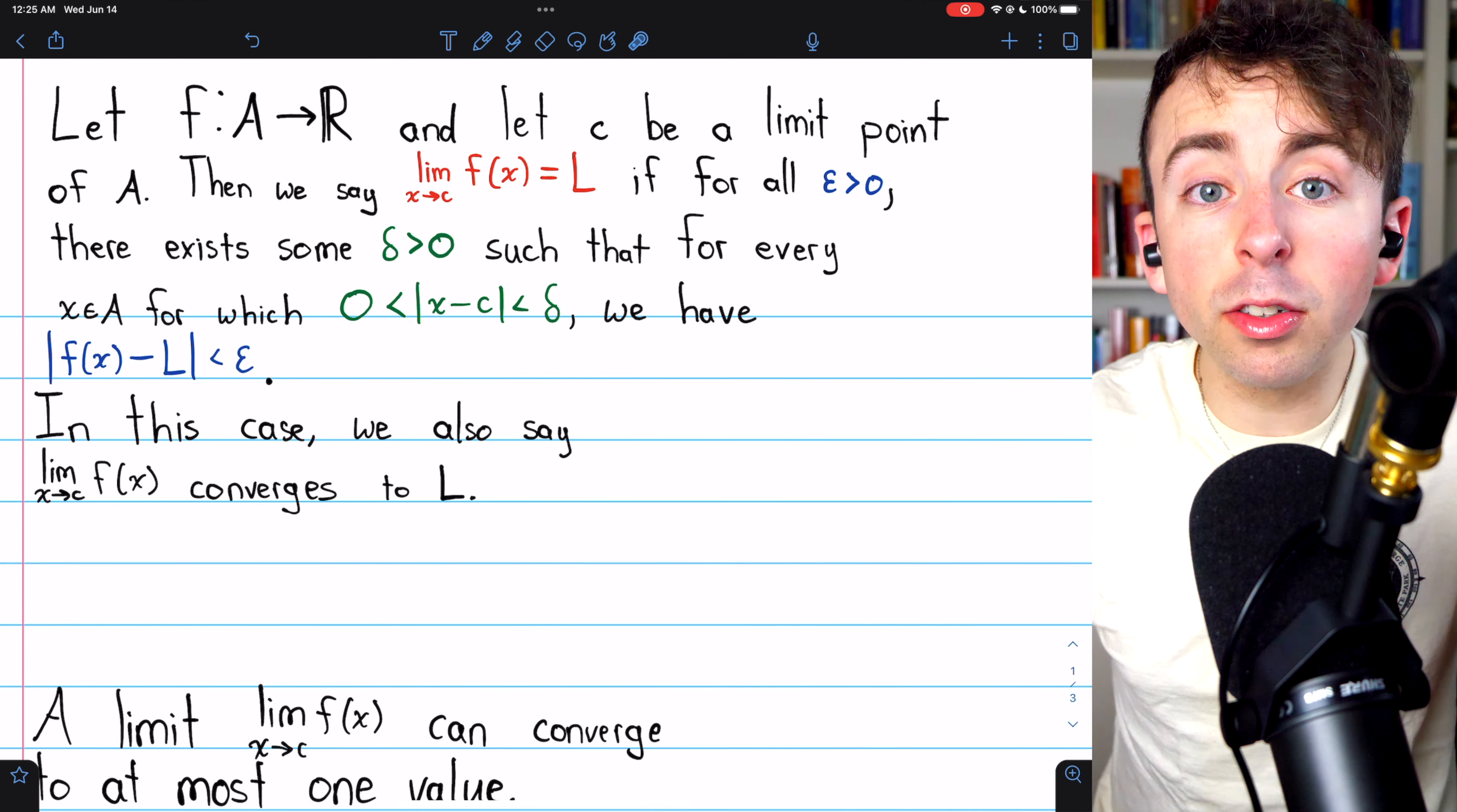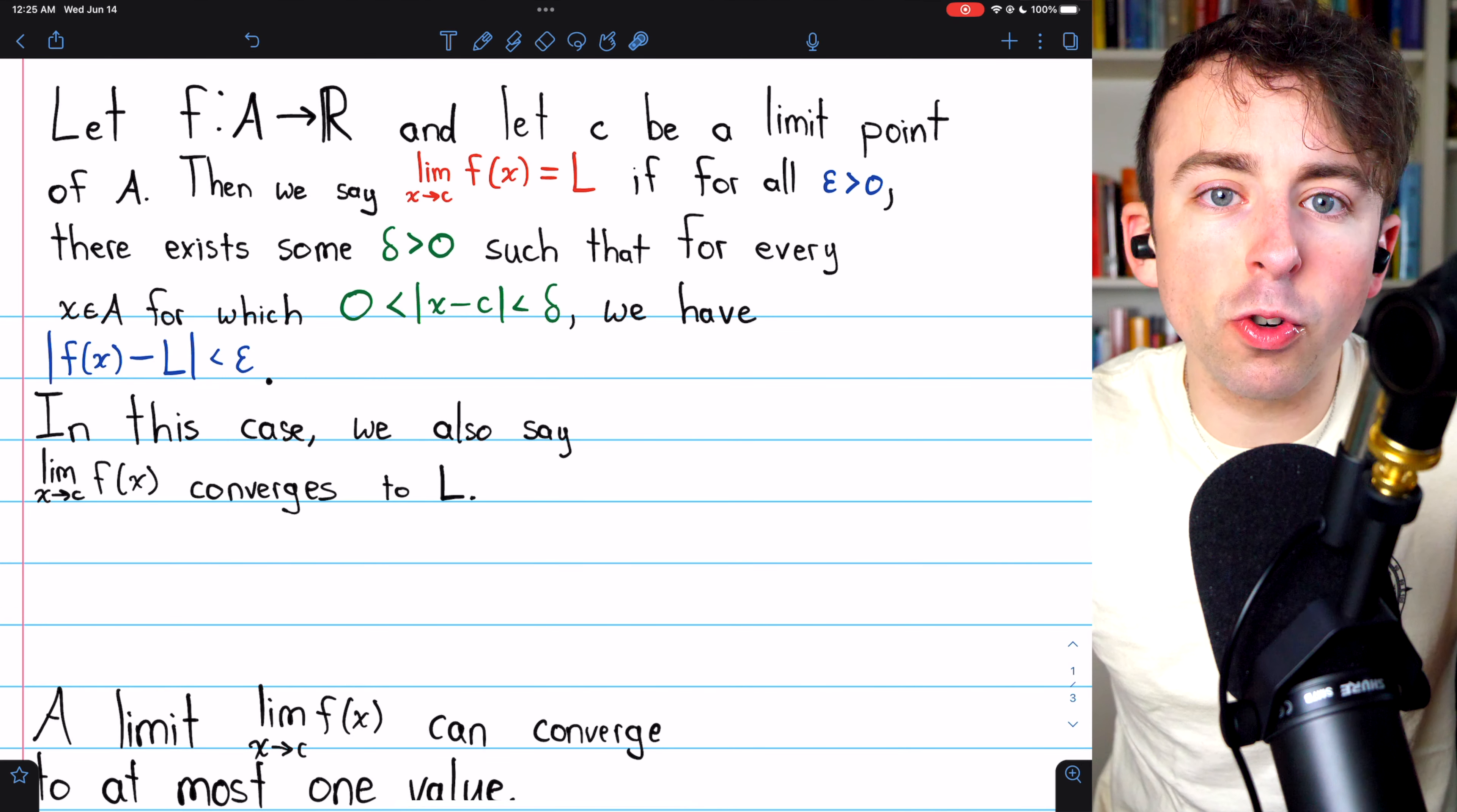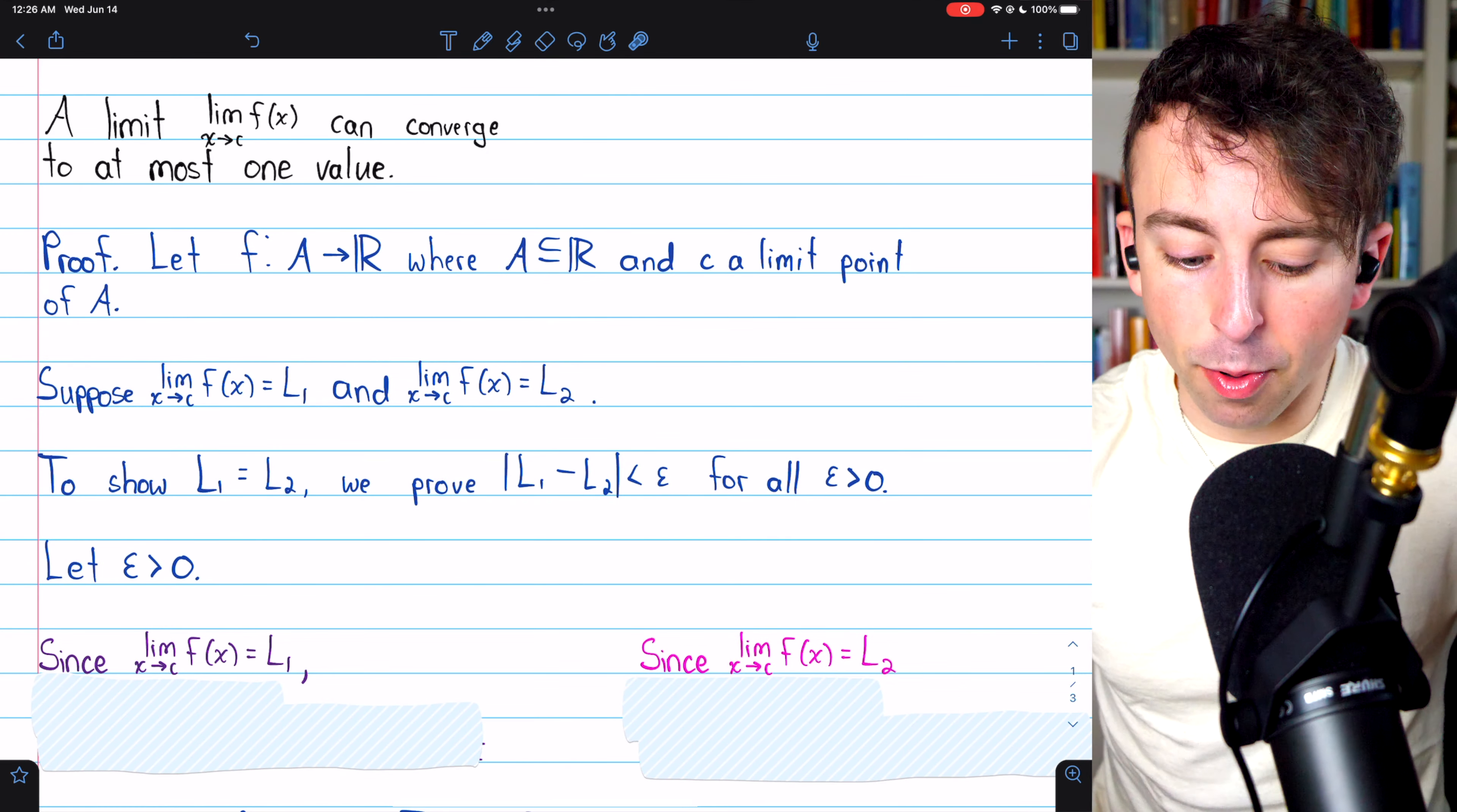The idea is we can assume our function has two limits at one point. Then, by definition of the limit of a function, the function will need to get arbitrarily close to both of those limits, which means those limits will have to be arbitrarily close to each other, and thus, they'll have to be equal. So, let's get into the proof.